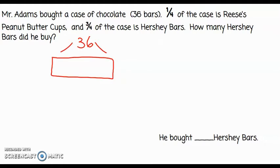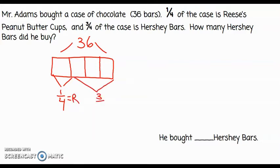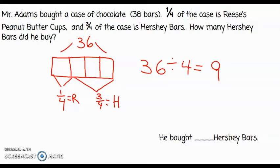And if I keep reading, I know that one fourth of the case is Reese's peanut butter cups and three fourths of the case is Hershey bars. So if I divide my tape diagram into four equal groups, this will help me understand what one fourth of 36 is. I know that one fourth is equal to the Reese's peanut butter cups and three fourths is equal to the Hershey bars. What I don't know is the value of each one of those fourths. So if I take my 36 and divide it into four equal groups, I find out that 36 divided by four is equal to nine.